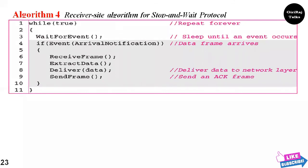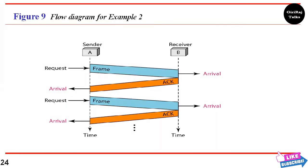The receiver-side algorithm for stop-and-wait is very similar to the simplest protocol receiver algorithm, with one exception: after the data frame arrives, the receiver sends an acknowledgement frame to acknowledge receipt and allow the sender to send the next frame. Figure 9 shows an example of communication using this protocol. The sender sends one frame and waits for feedback; when the ACK arrives, the sender sends the next frame. Sending two frames in this protocol involves the sender in four events and the receiver in two events.